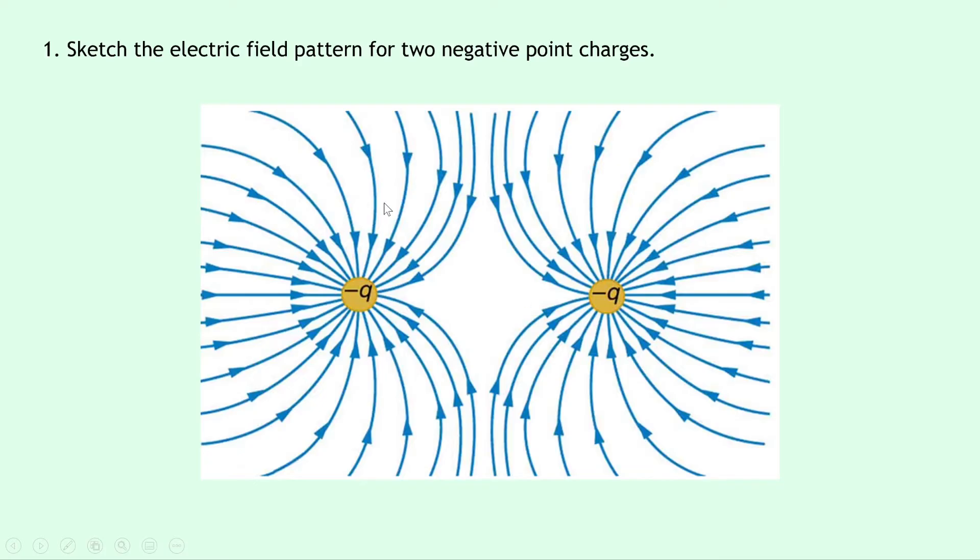You'll notice how the field lines on both sides are going in towards the negative charges because electric field lines go out of positive and into negative. As they get closer to the middle they start curving round more. In the middle section they curve from the top and go in towards the charge and then from the bottom they do a similar thing but go up this time and then in towards the charge. So the region in the middle here is where the electric field lines cancel out.